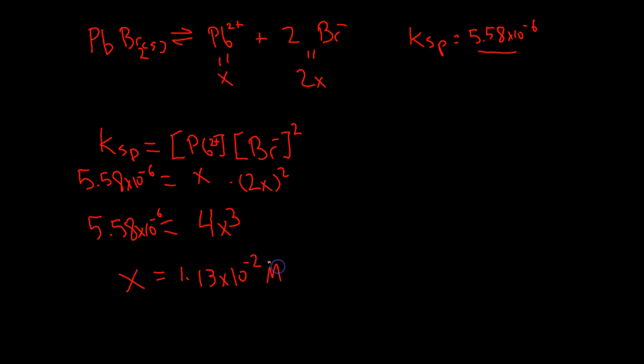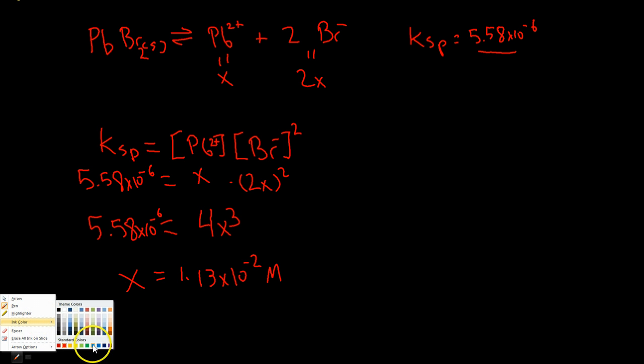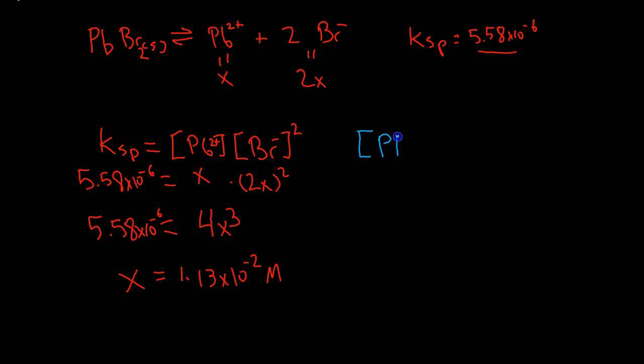And this is a molar concentration. And so we know that our lead is just 1x. So that's 1.13 times 10 to the minus 2. And since our bromide is 2x, we can say that this is just that times 2. So you get 2.26 times 10 to the minus 2 molar.